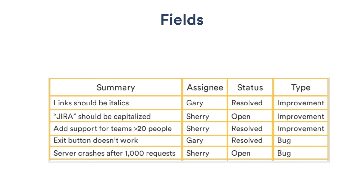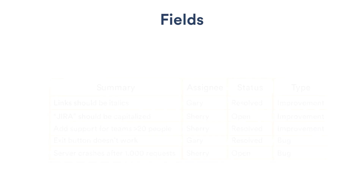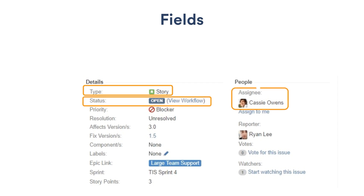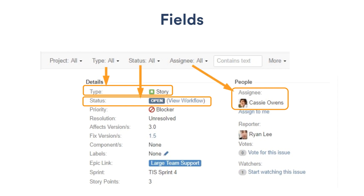Now it should be clear why it's so important to understand the nature of the issues in your projects, specifically the fields in the issues. Knowing what the fields are and the type of data each can store allows you to create the queries you need to be a rockstar Jira user. An issue in Jira can have fields like this, and the search criteria in the Basic Search bar correspond to those fields — these are the hooks available to you through search.